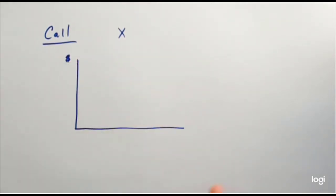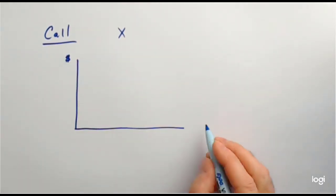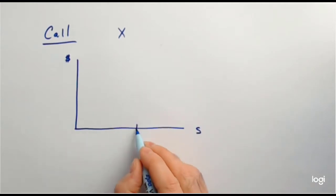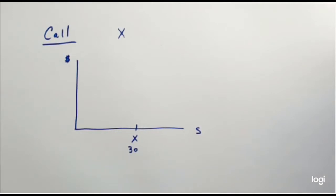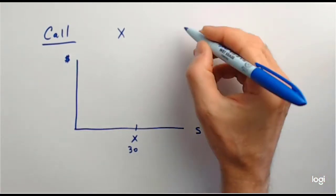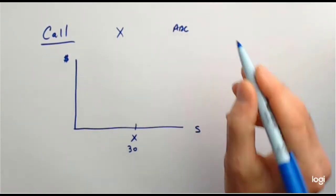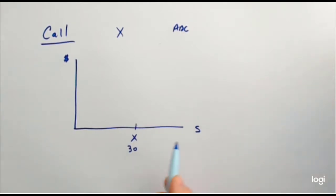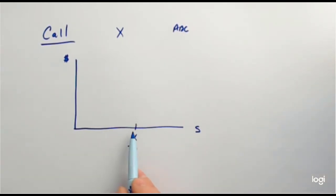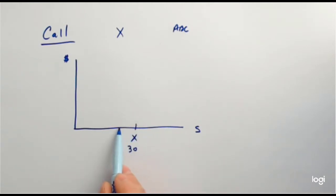Here we have dollars on the vertical axis and the stock price on the horizontal axis, and here is the strike price. Let's say the strike price is $30 on a stock. The stock price could be anything — it could be over $30, up here, or under $30, down here.